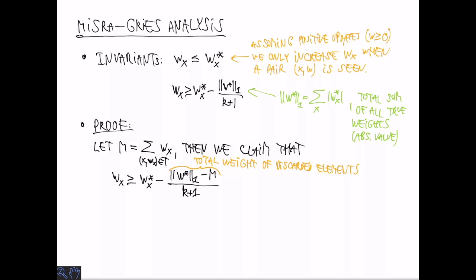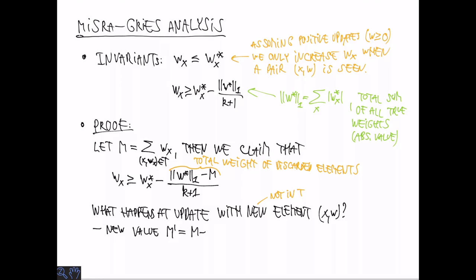So what happens when we update? Here we are going to focus on the case where there is no space in the sketch and we need to insert a new element X, W. That is where X is not in T. Let's denote the new value of M by M prime. So we are going to subtract the minimum M from k plus 1 values, the k ones in the sketch and the new element. And we are going to add the weight W.